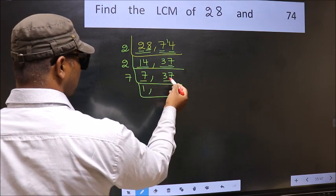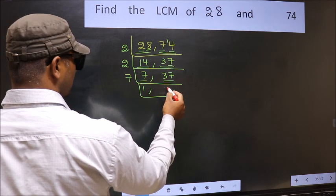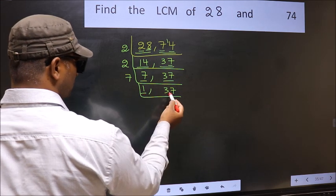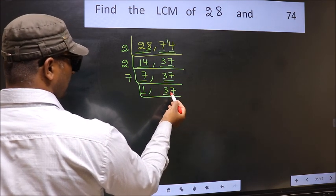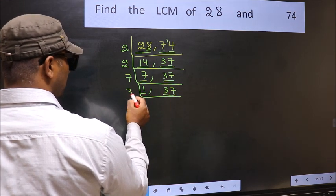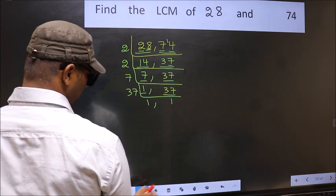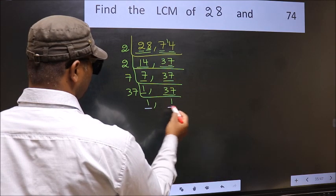The other number 37, not divisible by 7, so we write it down as it is. Now we got 1 here, so focus on the other number 37. 37 is a prime number, so 37 ones, 37. So we got 1 in both the places.